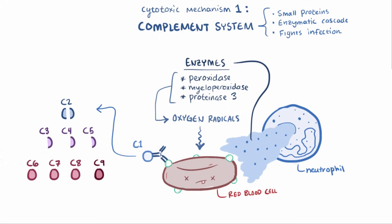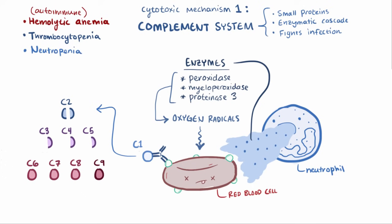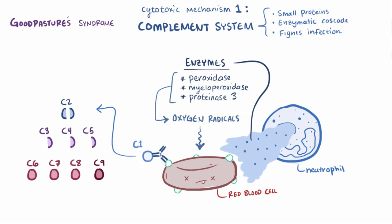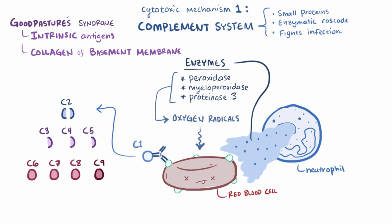When it comes to drug reactions like penicillin, type 2 hypersensitivity can result in hemolytic anemia, sometimes called autoimmune hemolytic anemia, as well as thrombocytopenia or neutropenia, since these are all blood cell types that are often affected. This mechanism is also involved in diseases like Goodpasture's syndrome, where antibodies bind to intrinsic antigens on collagen of the basement membrane in the glomeruli of the kidney or the alveoli in the lungs, rather than extrinsic antigens as in the penicillin example.